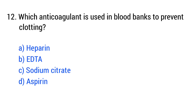Question No. 12. Which anticoagulant is used in blood banks to prevent clotting? The right answer is option C: Sodium citrate.